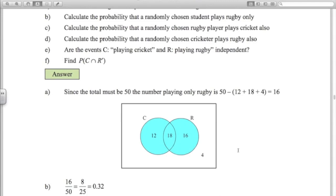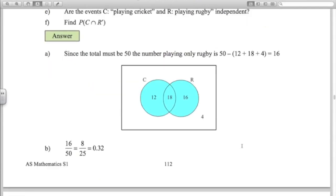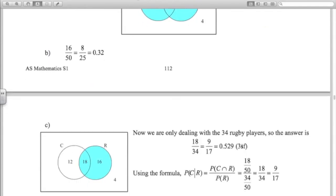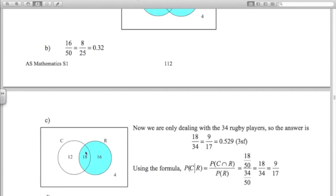So if we know we've got a rugby player, we know we're just dealing with the people inside this circle here. So if we look at the answer to C, we're only dealing with these 34 people here, the 34 rugby players. What's the probability of choosing one of those people out that they play cricket also? Well, there's 18 of those people that play cricket as well. So the answer to the question is 18 out of 34. 9 over 17 or 0.529.